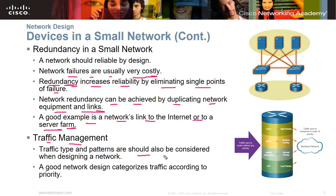Traffic type and patterns should also be considered when designing a network. Bandwidth and how much data flows matters — database traffic is heavier than a web portal. A good network design categorizes traffic by priority. Voice over IP has the highest priority because phones must stay up. FTP has lower priority because files can be queued, resent, and retried. So you have higher and lower priorities based on services.